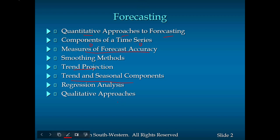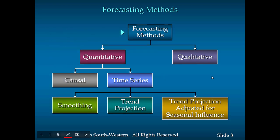And we're going to touch lightly on the quantitative approach. This roadmap shows us the different branches of forecasting methods. We're going to focus on the quantitative methods, especially on time-series analysis. We have smoothing methods — that's the number one method. The second is trend projection, and also trend projection with the seasonal component or seasonal adjustment. Those three are the major tools under time-series analysis.